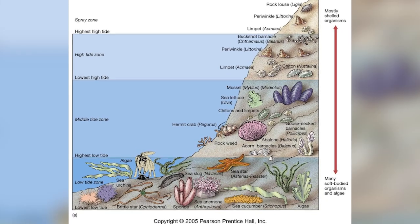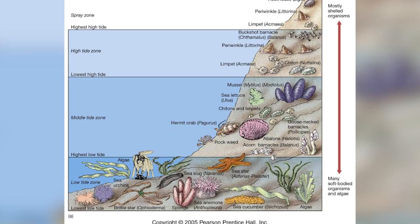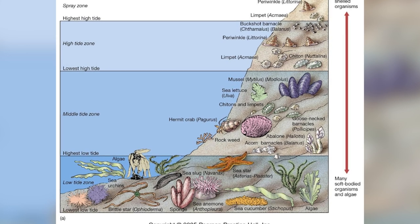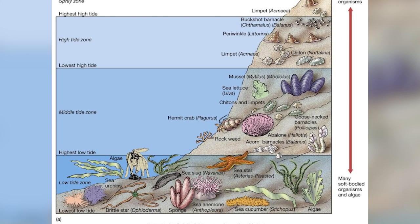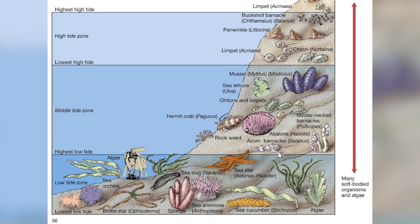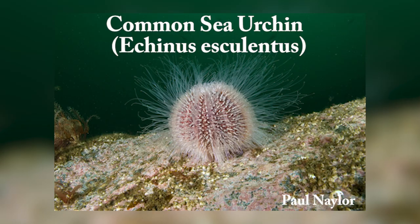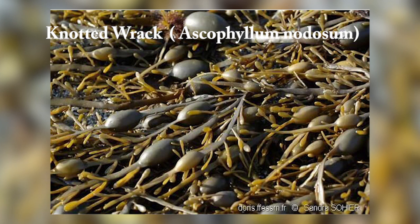And finally, there is the low intertidal zone, which is virtually always underwater, except during the lowest spring tides. Here you will find animals such as crabs, sea urchins, shrimps and snails, and brown seaweeds such as bladder wrack and knotted wrack.